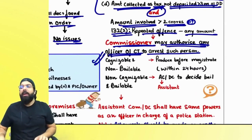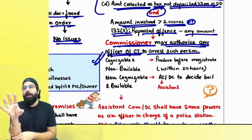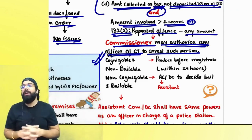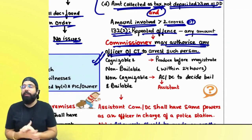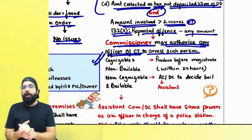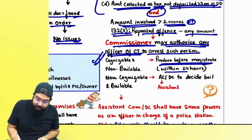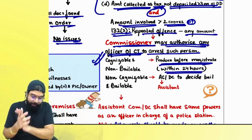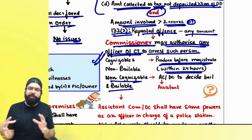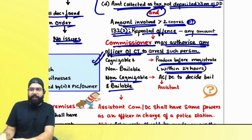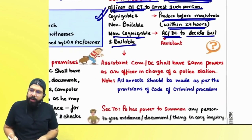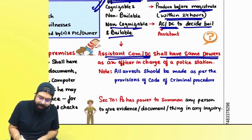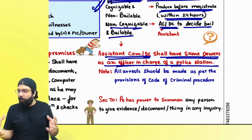Always remember: arrests are of two types. One is cognizable and non-bailable — this applies only when the four offenses are committed and the amount is greater than ₹5 crore. Cognizable means a severe offense. Non-bailable means the arresting officer will not tell you the bail amount — you will be presented before the magistrate within 24 hours, and the magistrate will decide whether to give bail or send you to jail. Non-cognizable and bailable applies for non-severe offenses wherein the assistant commissioner or deputy commissioner will decide the bail amount; presenting before a magistrate is not required. The AC or DC shall have the same powers as an officer in charge of a police station.